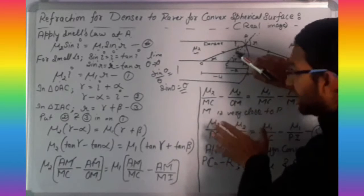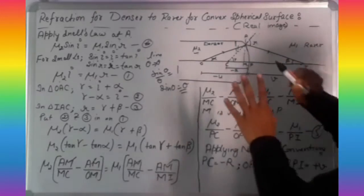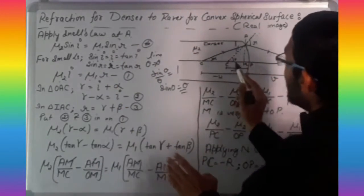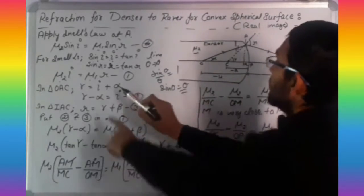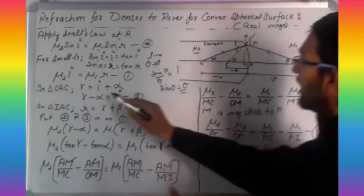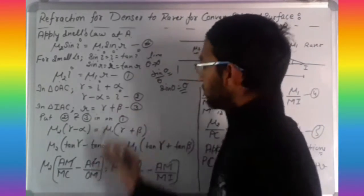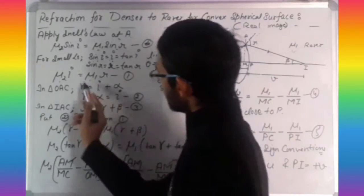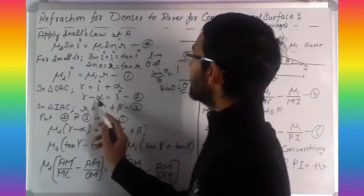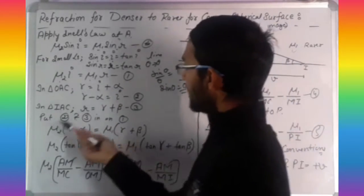In the second step, for the object triangle, gamma is the exterior angle and alpha and i are the interior angles. By the exterior angle property, gamma equals i plus alpha. Keeping i on one side, we get: gamma minus alpha equals i. This is equation two.